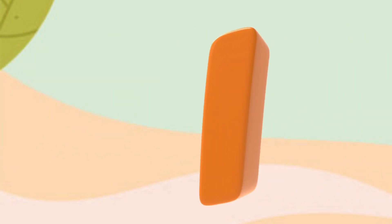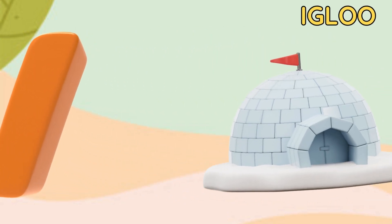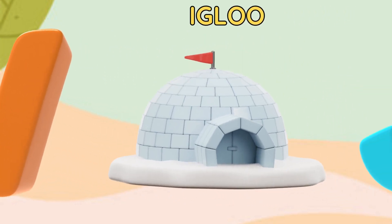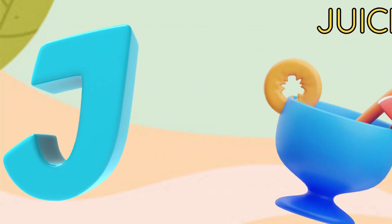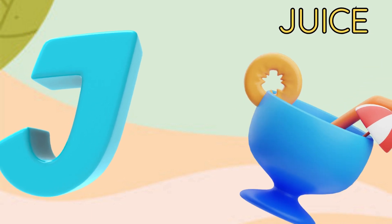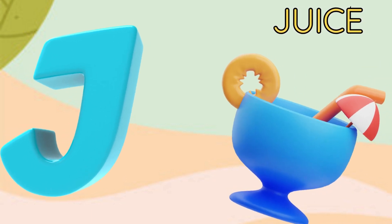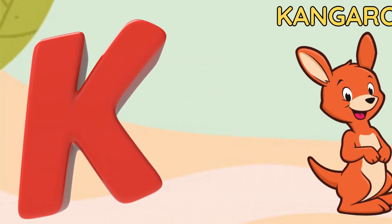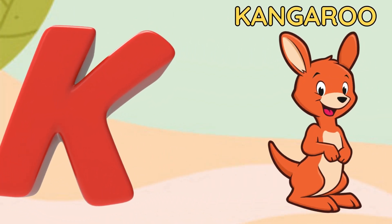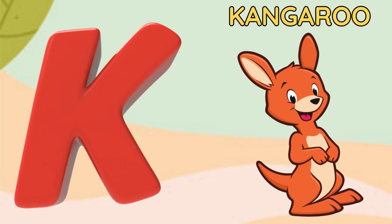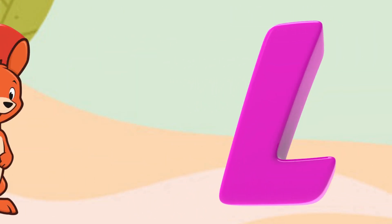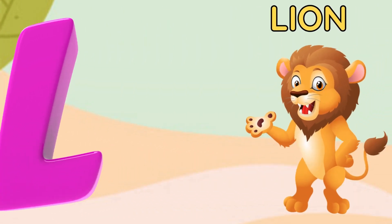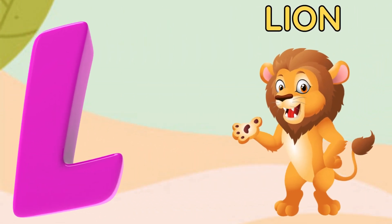I is for igloo, e-e-igloo. J is for juice, ju-ju-juice. K is for kangaroo, k-k-kangaroo. L is for lion, lion.